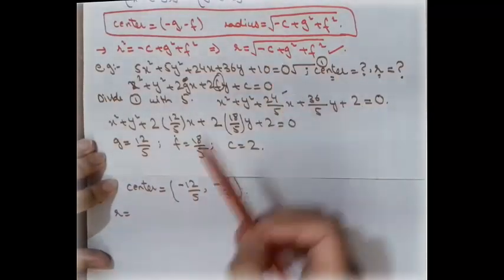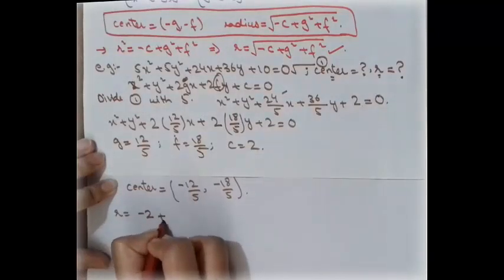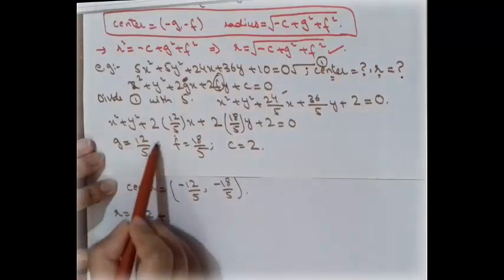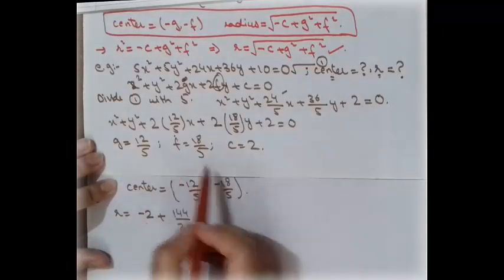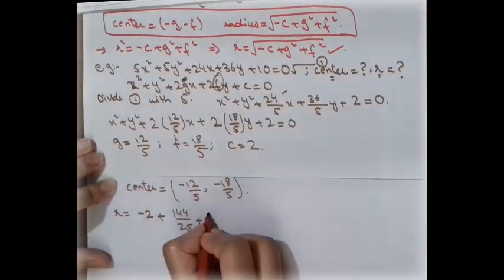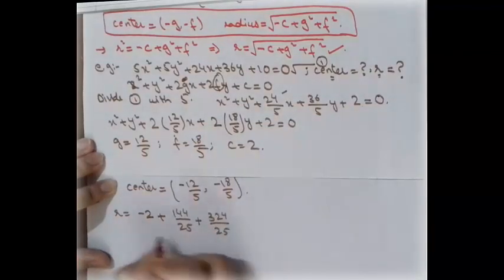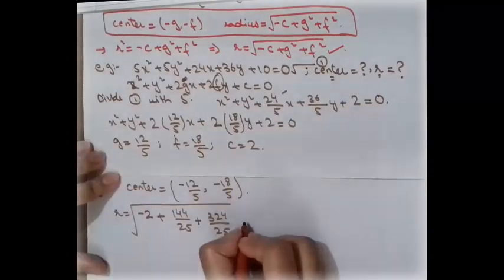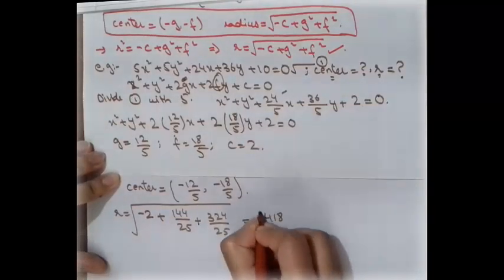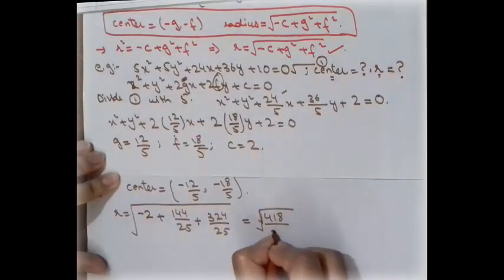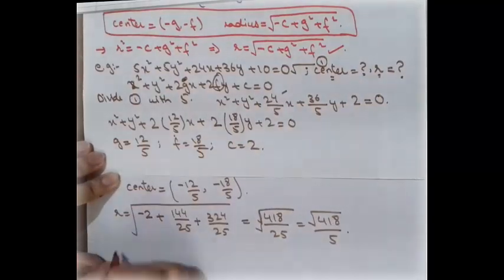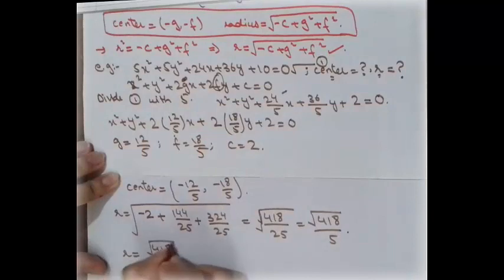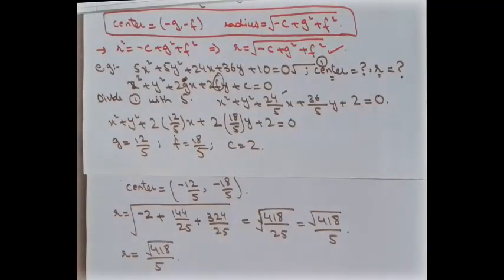To compute the radius: r = √(g² + f² − c) = √(144/25 + 324/25 − 2) = √((144 + 324 − 50)/25) = √(418/25) = √418 / 5. This is the radius of the circle. That covers today's lecture — if you liked this, don't forget to subscribe, like, comment, and share.